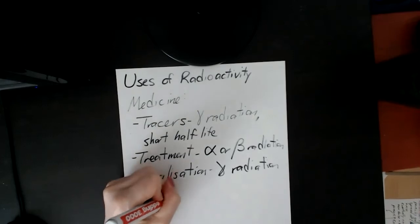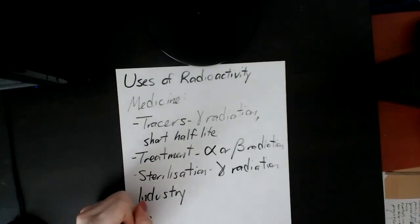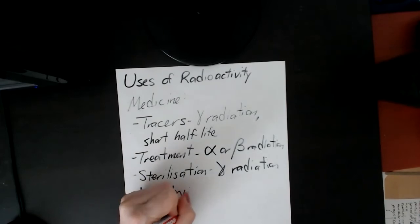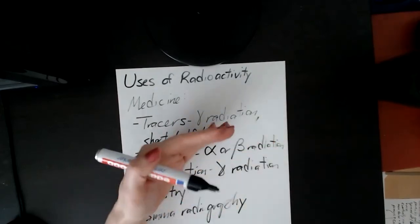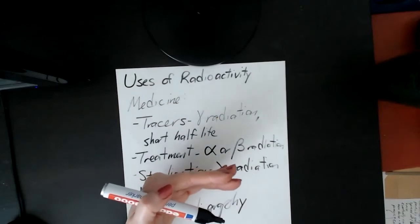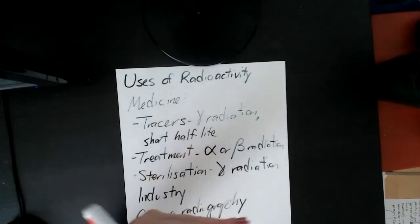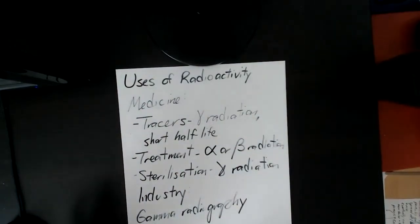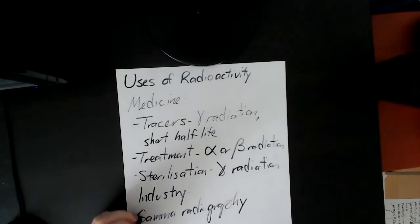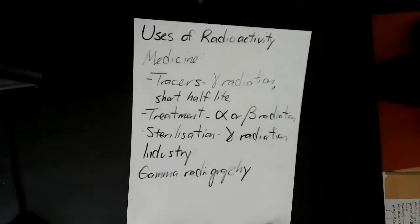So it can be used in construction as well to basically, you can pass the gamma waves through and then have a photographic film on the other side. And that way you can see what the structure looks like, whether there's any faults or cracks in like a welding support or something like that. And so x-rays work for all of this as well. But gamma radiography is often more convenient because x-rays usually need a power source and they are quite large. So gamma radiography is used if you want it to be portable and you don't need to have a power source or any large equipment.